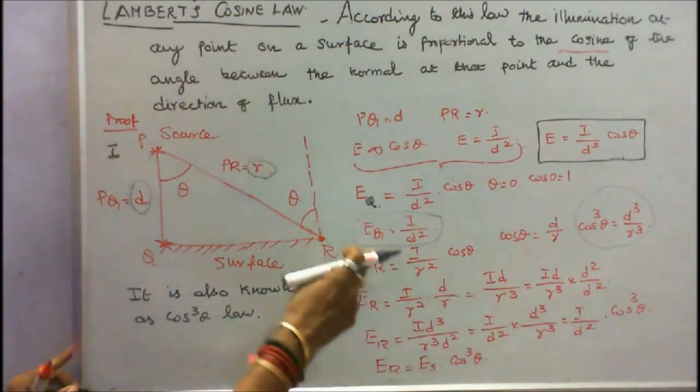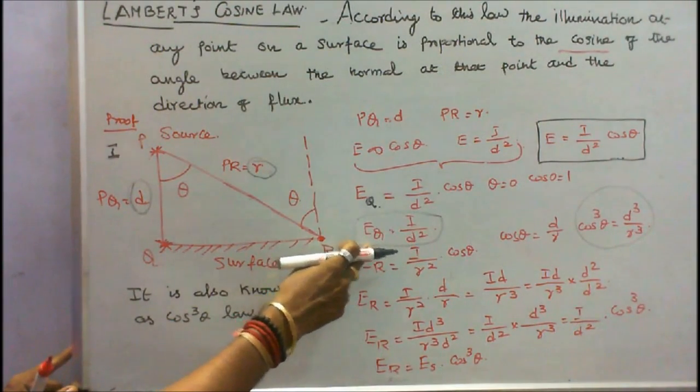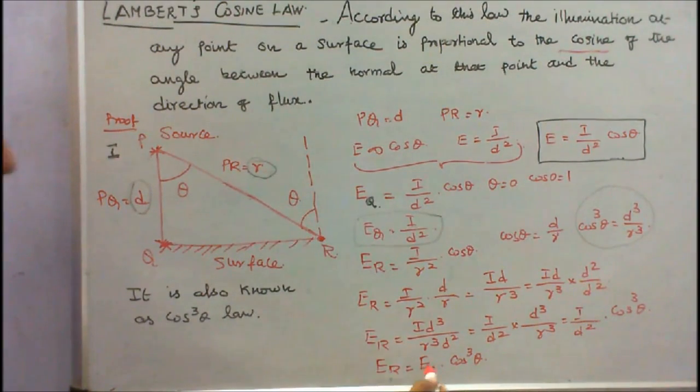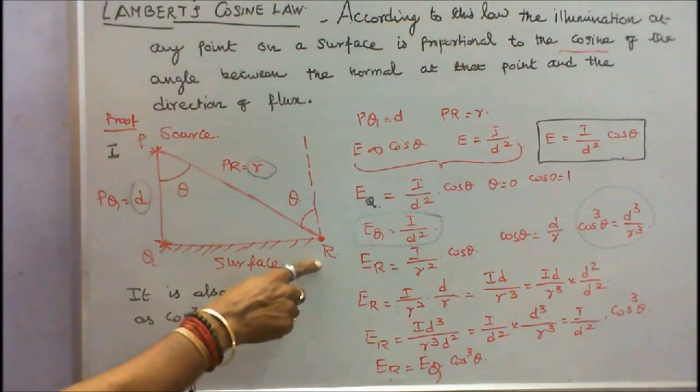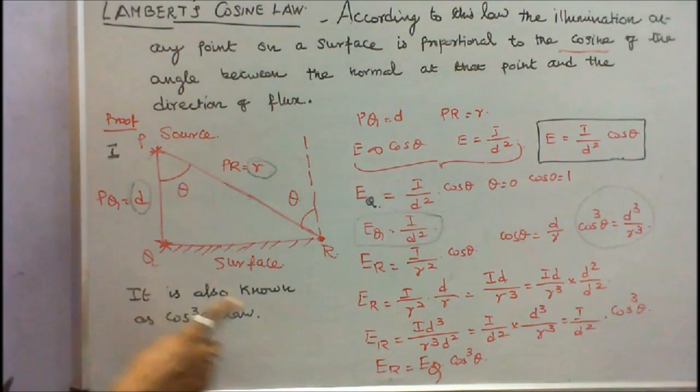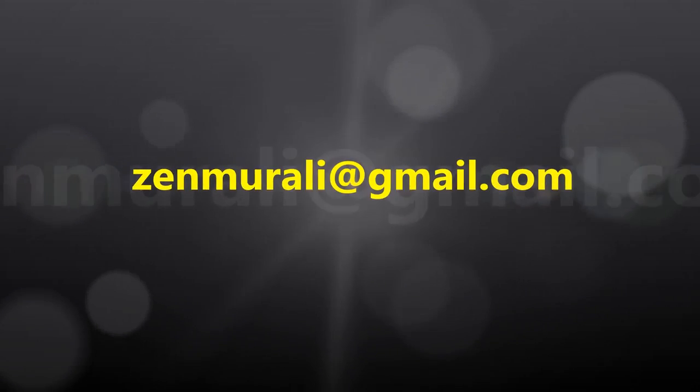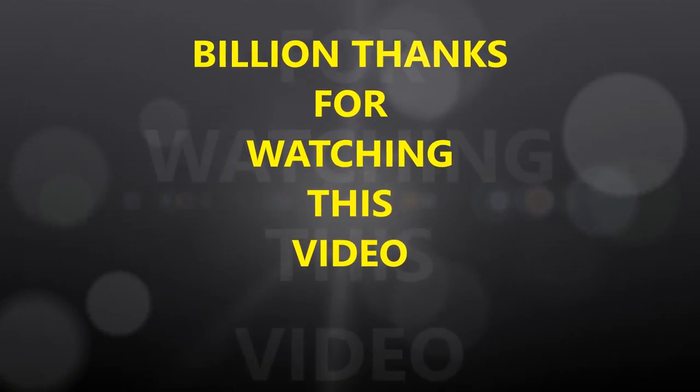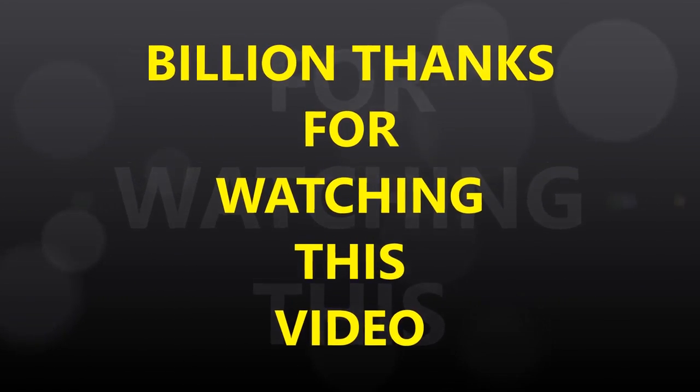So I by D square is equal to EQ. Therefore, illumination at point R can be written as illumination at EQ into cos cube theta. This is also known as cos cube law.